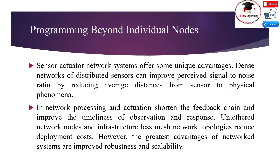Sensor actuator network systems offer unique advantages. Dense networks of distributed sensors can improve signal-to-noise ratio by reducing the average distance from sensor to physical phenomena. In-network processing and actuation shorten the feedback chain and improve the timeliness of observation and response. Untethered network nodes and infrastructure-less mesh network topologies reduce deployment cost.